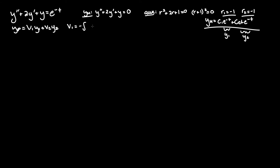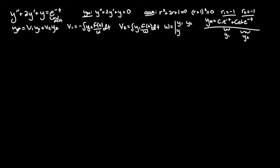v₁ equals the negative integral of y₂·f(t) over the Wronskian dt, where f(t) is the right-hand side. v₂ equals the positive integral of y₁·f(t) over the Wronskian dt. You just have to memorize these two formulas. The Wronskian is used in linear algebra to determine if two functions are linearly independent. It equals y₁y₂' − y₁'y₂, using the determinant of the matrix [y₁, y₂; y₁', y₂'].